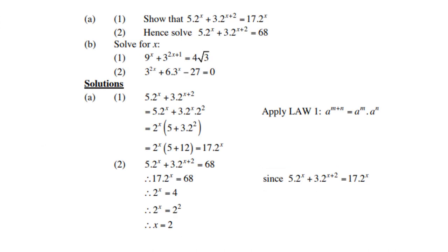Let's look at the first example here. Show that 5 times 2 to the power x plus 3 times 2 to the power x plus 2 is equal to 17 times 2 to the power x, and then hence solve 5 times 2 to the power x plus 3 times 2 to the power x plus 2 equals 68. That is in A.